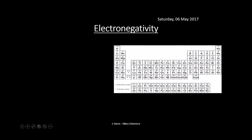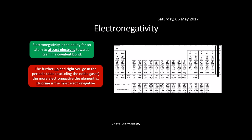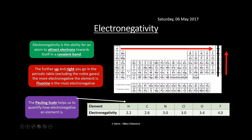Electronegativity is the ability of an atom to attract electrons towards itself in a covalent bond. The further up and to the right you go in the periodic table (excluding noble gases), the more electronegative the element. Fluorine is the most electronegative. The Pauling scale helps quantify electronegativity — fluorine scores the highest at 4. The bigger the difference in electronegativity between atoms, the more polar the bond.